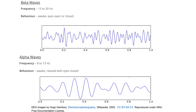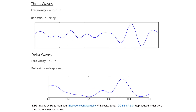Beta waves have a frequency of 13 to 30 hertz and are normally seen in a patient who is awake with their eyes open or closed. Alpha waves are slightly slower, with a frequency of 8 to 13 hertz, and are found in an awake but relaxed patient with their eyes closed. Theta waves are slower again, with a frequency of 4 to 7 hertz, and are normally found during sleep.